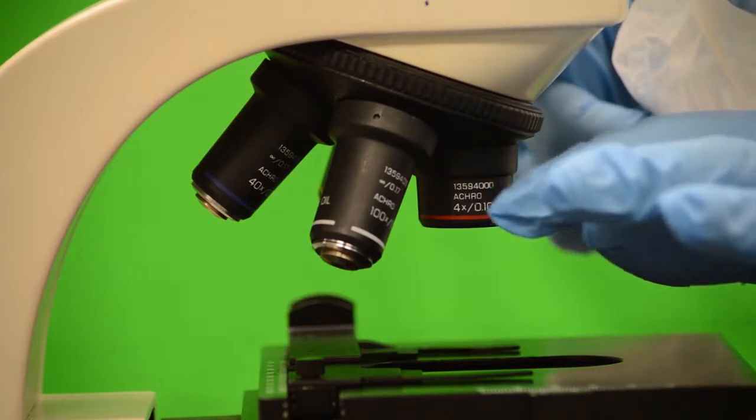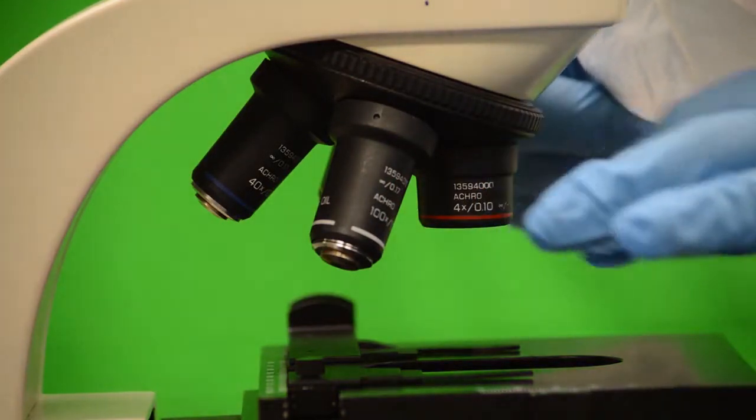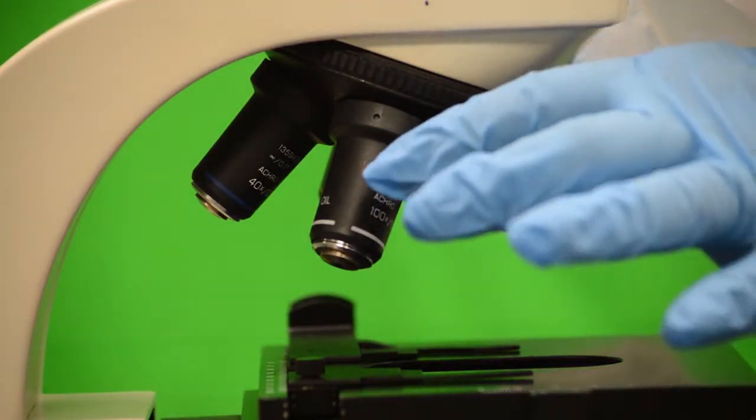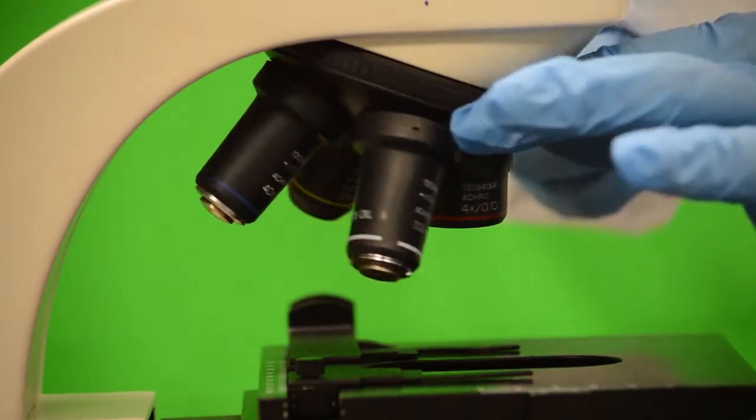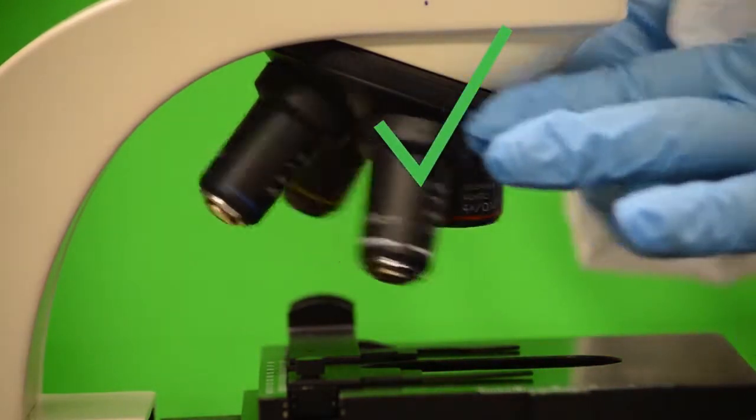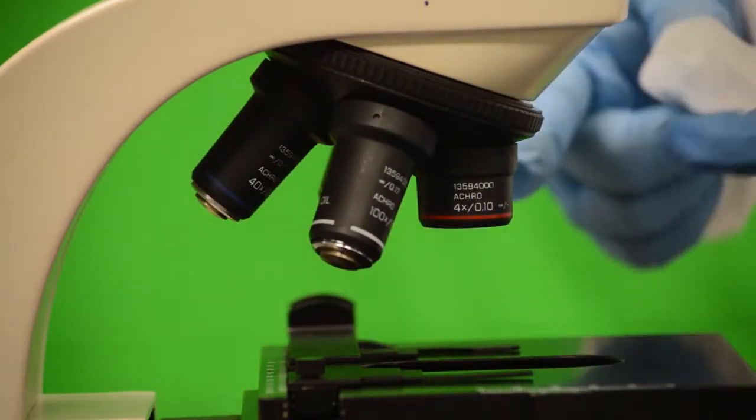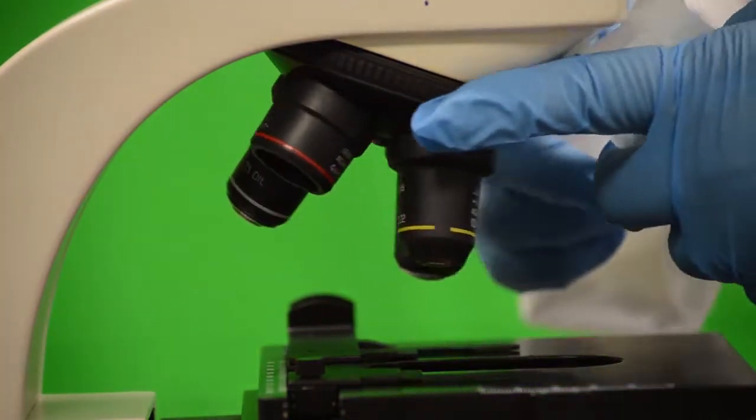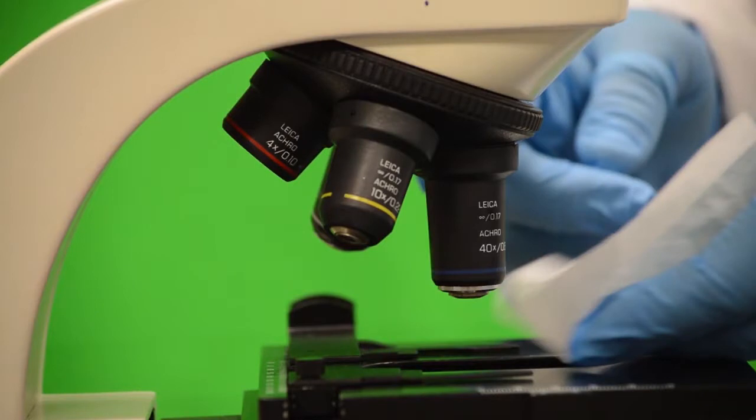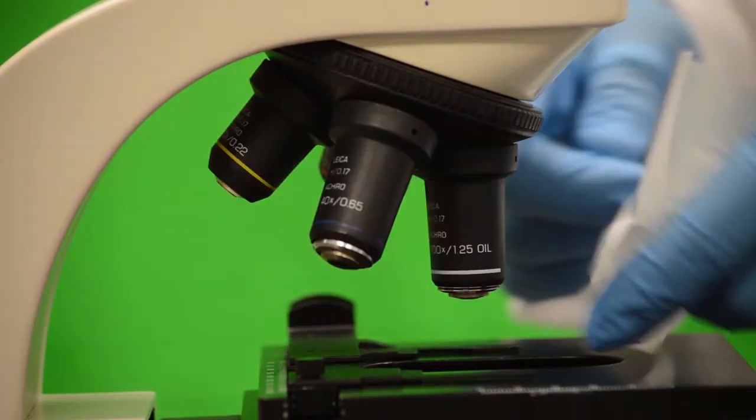The objective is placed over the material. This is the lens you place over the object that you are observing. On your scope, there are several objective lenses: the scanning objective, the 4x; the lower power, 10x; the high dry, 40x; and the oil immersion lens, 100x.